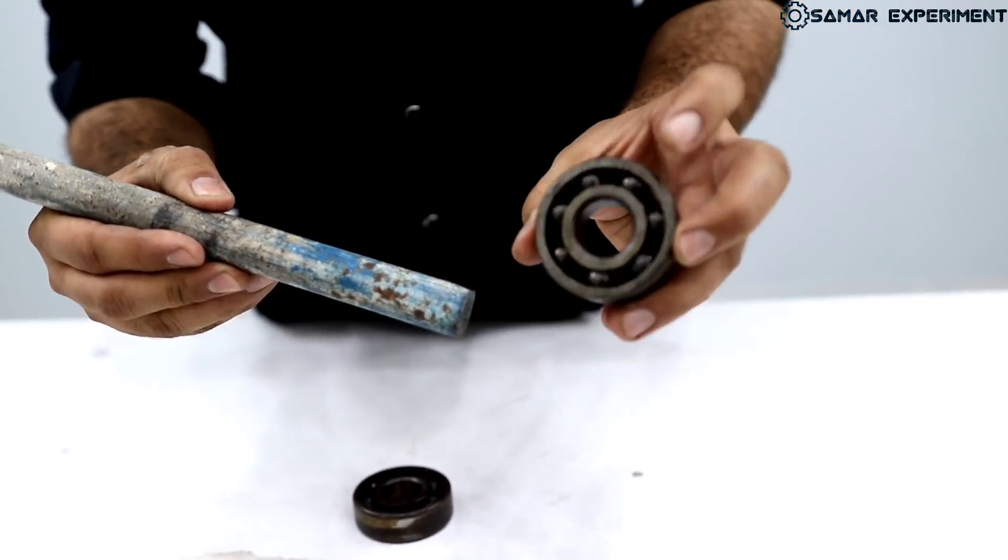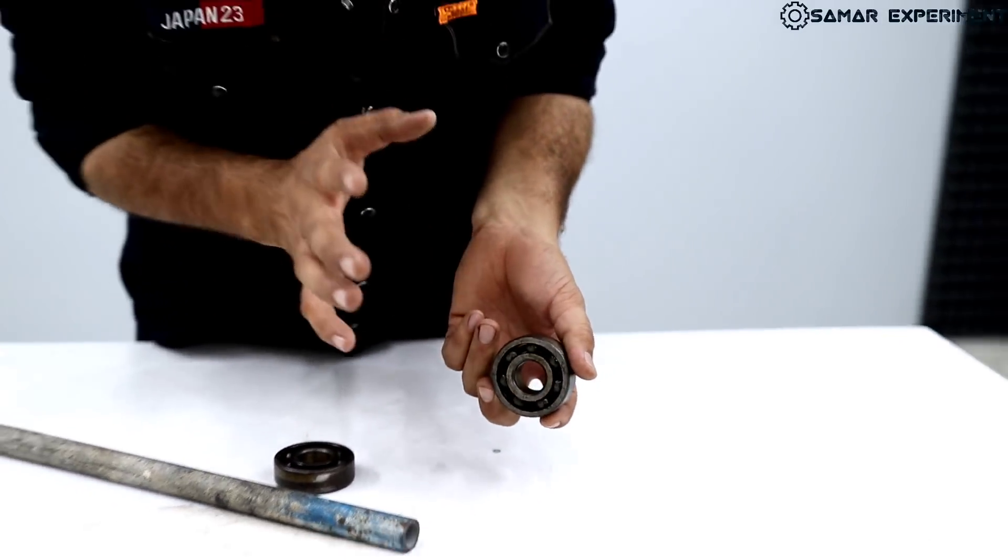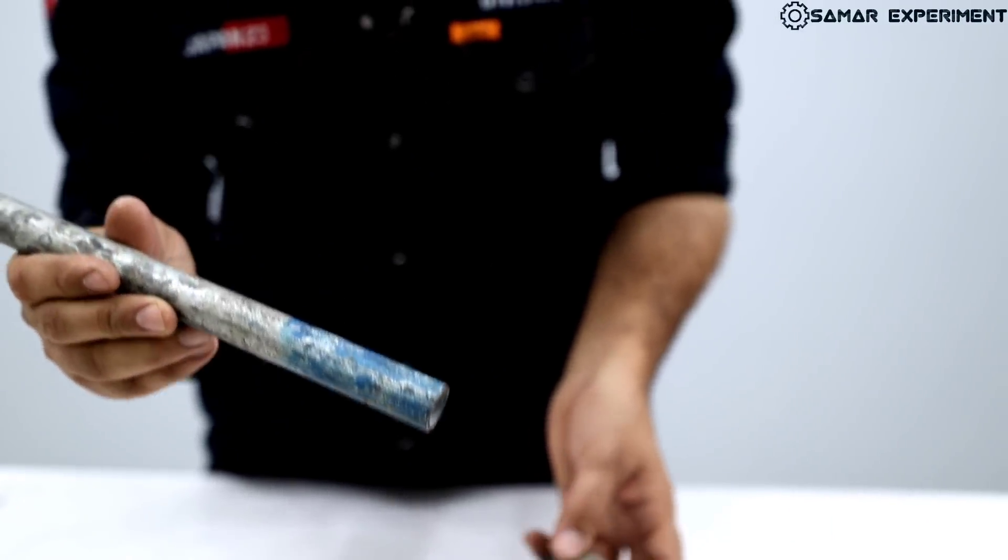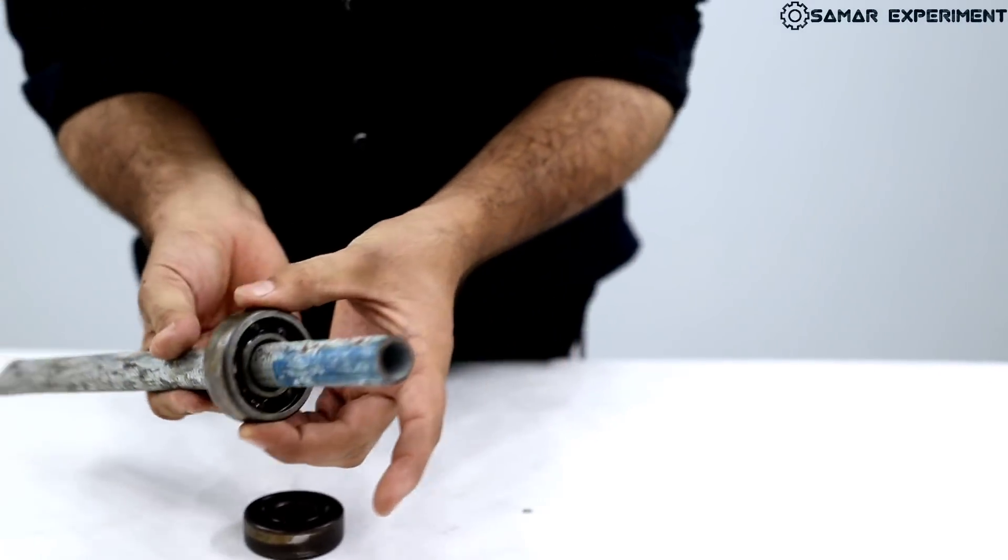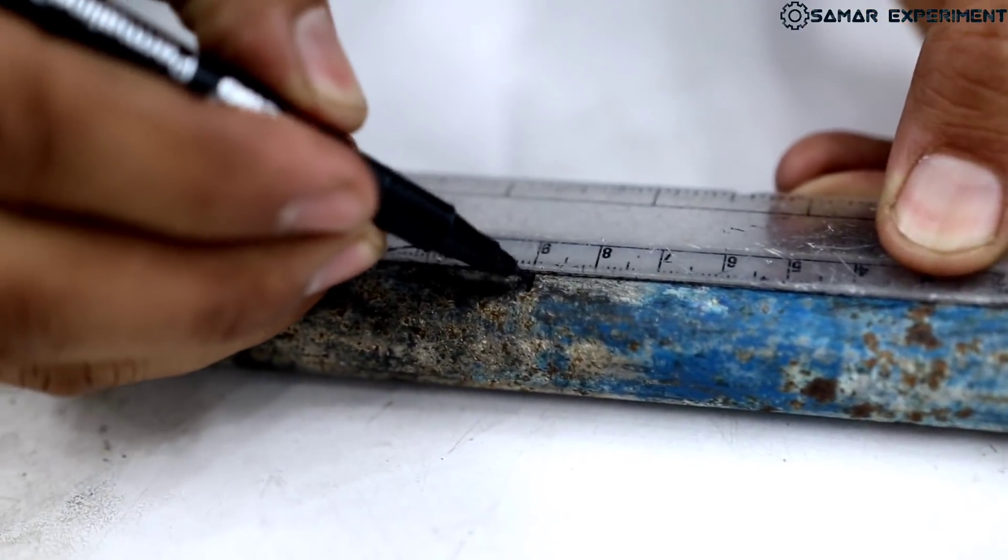So friends, see, this diameter is so much. Friends, it needs to be a bearing. It needs to fit this pipe. So here we will cut this pipe. We will cut 9 cm.